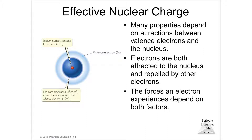Also, the electrons are repelling each other. And if you are far away from the nucleus and you have electrons in between you and the nucleus, those electrons are actually pushing you away at the same time the nucleus is pulling you in. So in some ways, the electrons in between the valence electron and the nucleus are shielding the effectiveness of the nucleus to pull that electron in. So the ones that have high shielding power are easier to steal than the ones that have weaker shielding power.